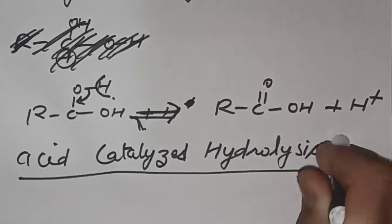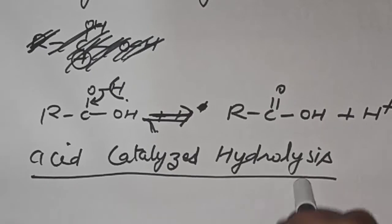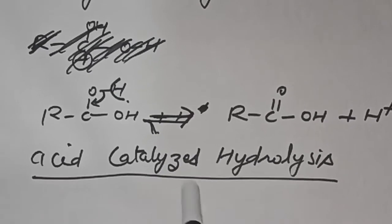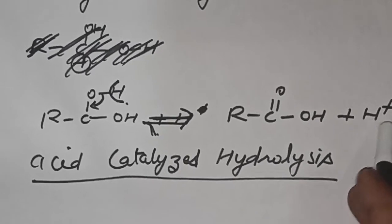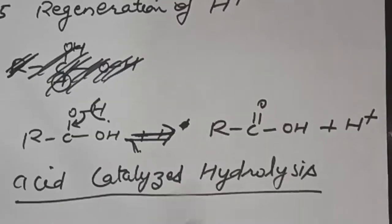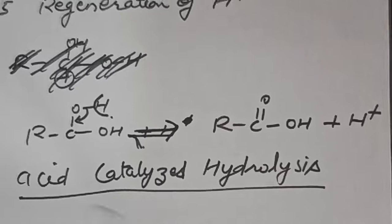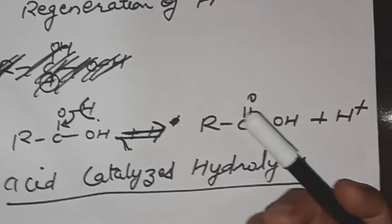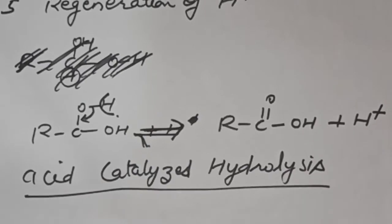This hydrolysis is called acid-catalyzed hydrolysis because the acid is regenerated at the end, which is the characteristic of a catalyst. We have discussed acid-catalyzed hydrolysis today. Tomorrow we will discuss alkaline hydrolysis of esters. If there is any problem you can ask on the personal WhatsApp number. Thank you.